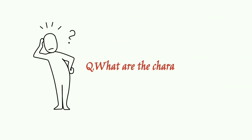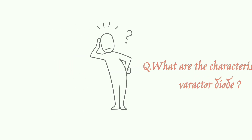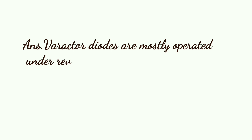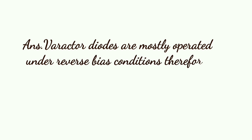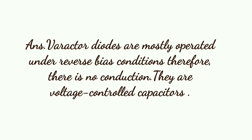What are the characteristics of Varactor Diode? Varactor Diodes are mostly operated under reverse-bias condition, therefore there is no current conduction. They are voltage-controlled capacitors.